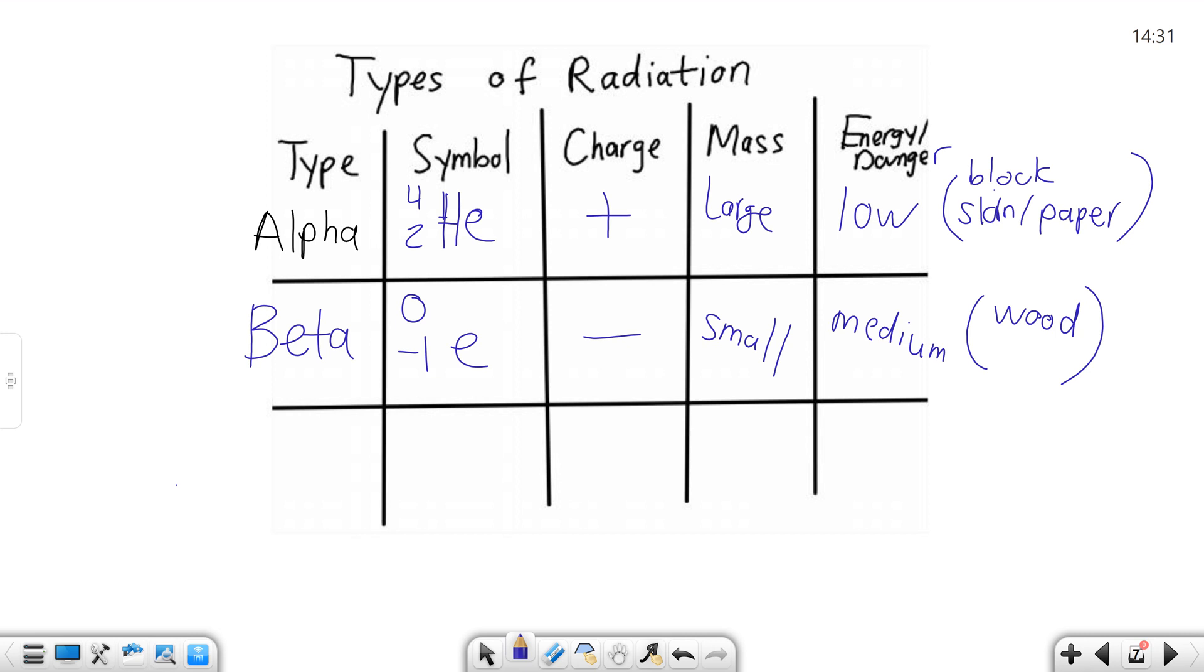And we will say it basically has medium danger with it. You need basically wood to block beta out, wood, bricks and stuff like that. So if you're in a building you're going to be okay from beta radiation if it's extreme. The thing is, this stuff's being released all the time from the soil and everything like that, it just loses energy pretty quickly as it travels through space.